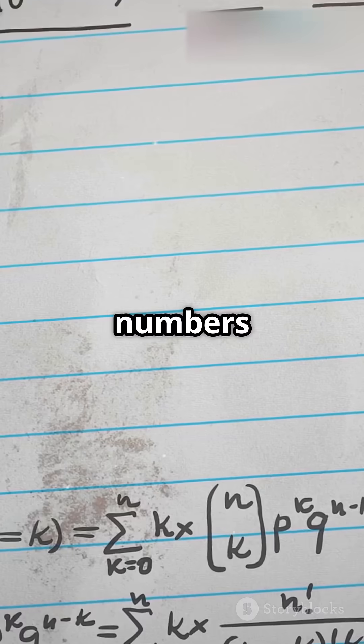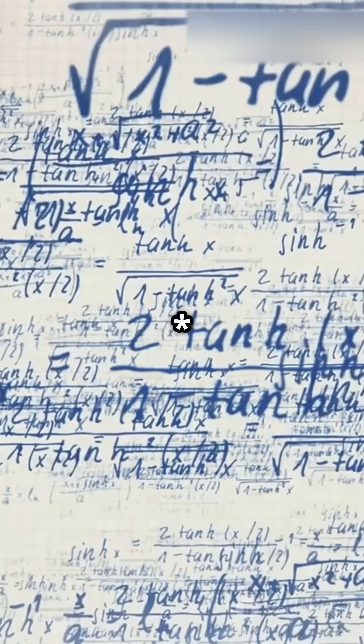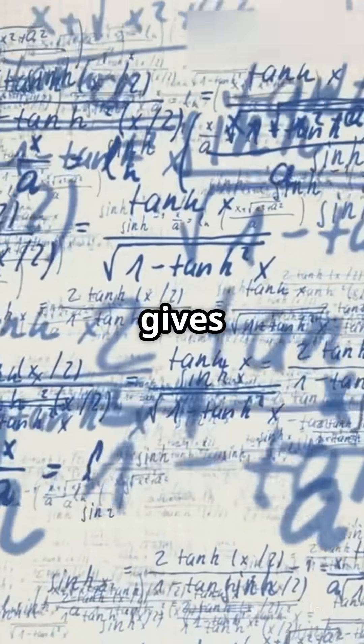Plugging in the numbers, tan helix angle equals 6 divided by pi asterisk 50. That gives us approximately 0.0382.